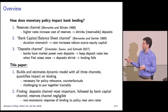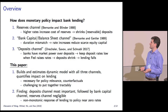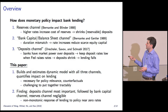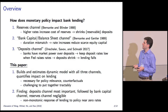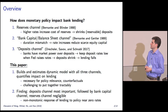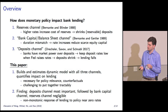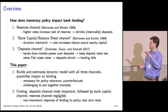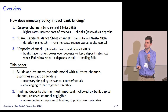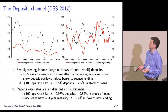What they find, bottom line, is that the deposits channel has the largest effect on bank lending. It's followed by the bank capital channel, and the reserves channel is negligible and could be ignored. The paper also has some interesting results on the non-monotonic response of lending to policy rates near the zero lower bound, which I think is pretty interesting.